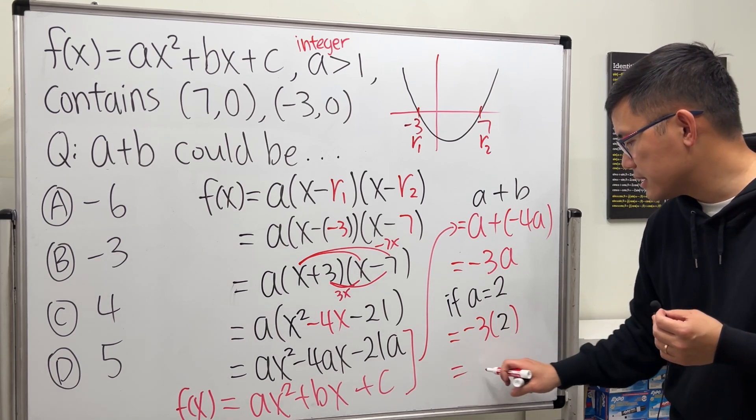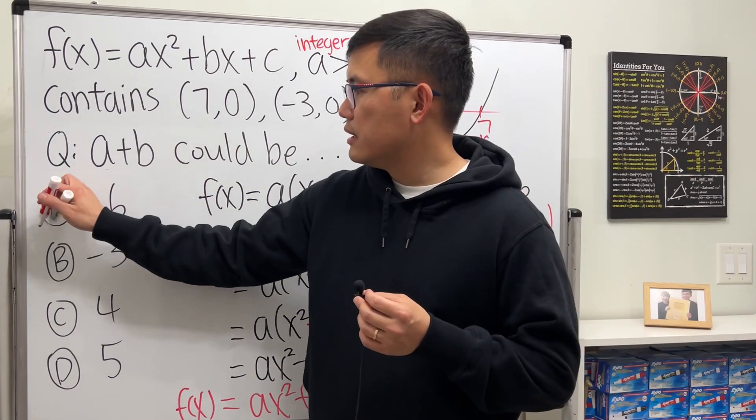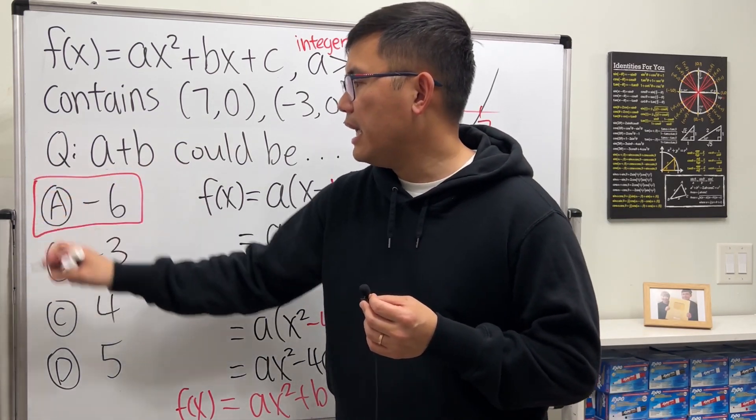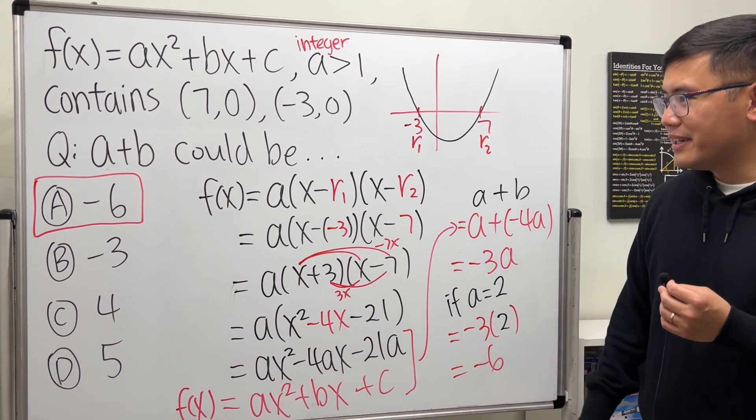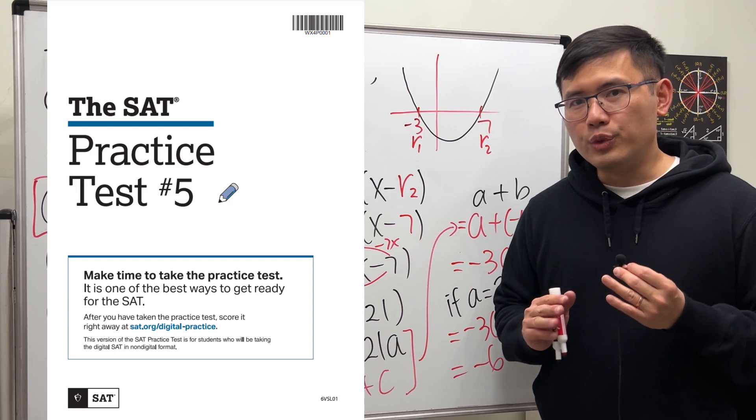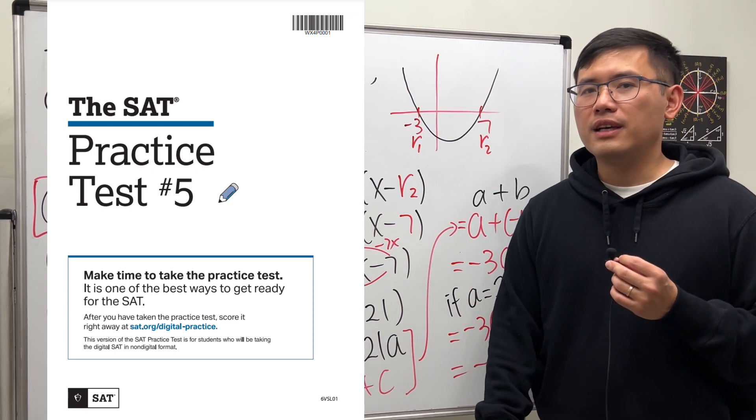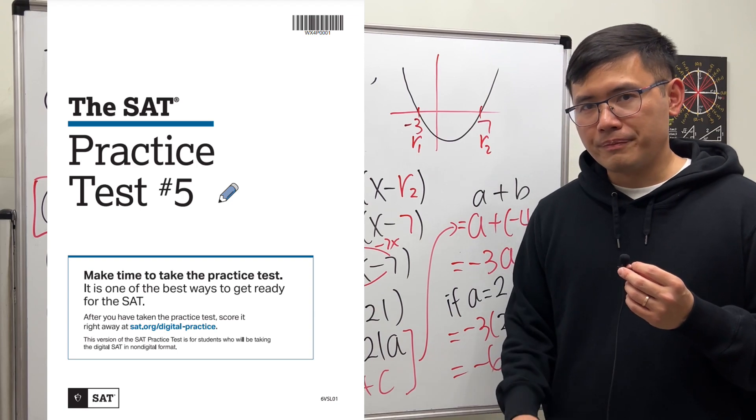Therefore the answer is -6, which is A, the capital A option for that. This question is from the official released practice question, so if you guys want to do more practice questions on your own I will have the link to the page for you guys in the description.